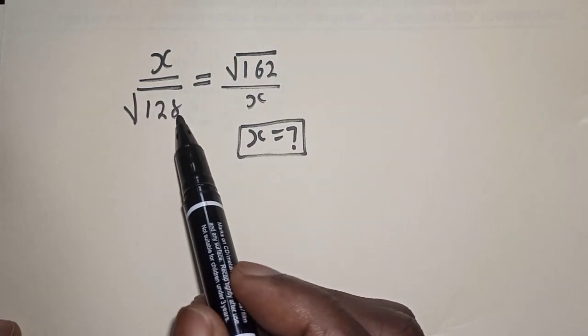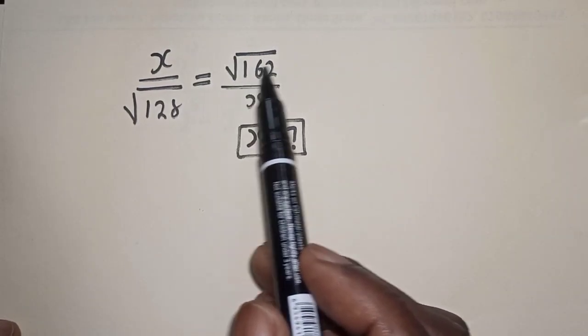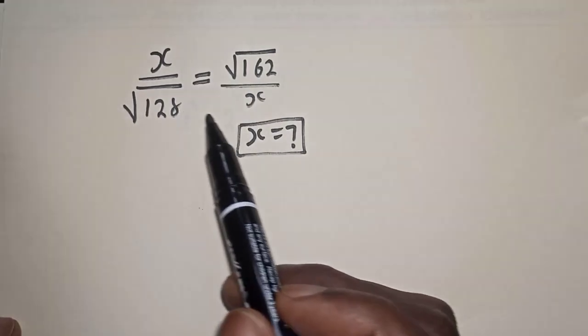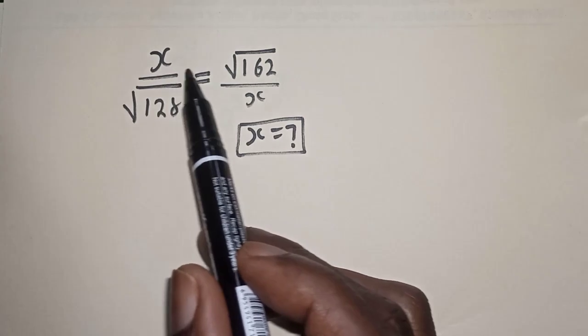x over square root of 128 is equal to square root of 162 over x. What is the value of x? Hi everyone, welcome to my class. In this class, I want to find the value of x from this equation.